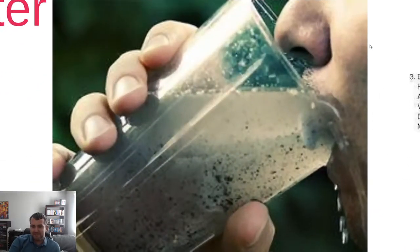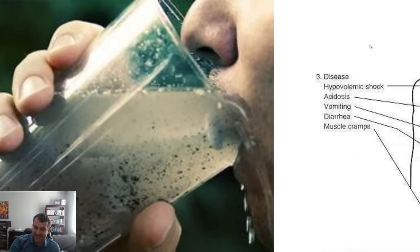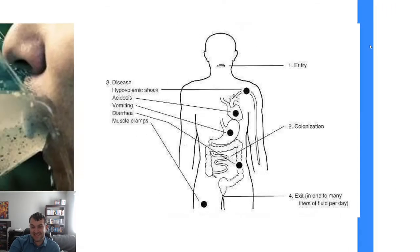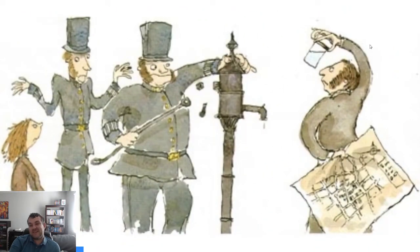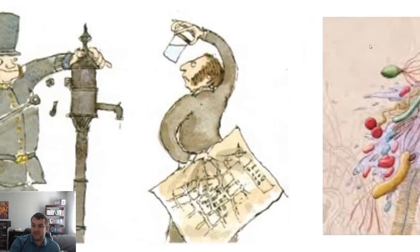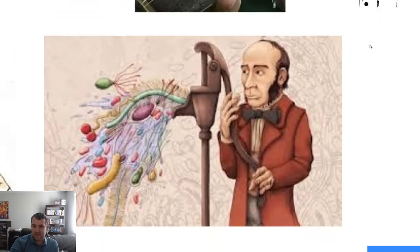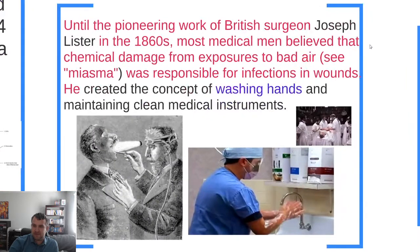Here's a guy drinking some gross water — definitely don't recommend that. This is what cholera does to your body — it's just a really terrible, terrible disease. Here they are taking off the handle of the Broad Street pump. And here's John Snow showing that there are all kinds of little germs coming out of water pumps.